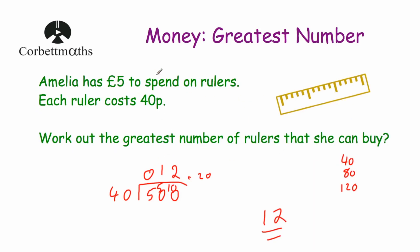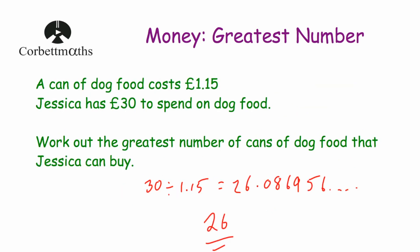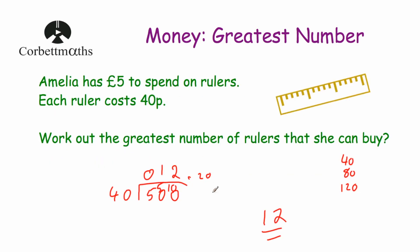In this video we've looked at how to find the greatest number, or maximum number, of an item that can be purchased for a certain amount of money. We've looked at how to do it using a list of multiples — the cost of one item, two items, three items, and so on — and also using division and a calculator. We've also looked at how to work out how much change is left after buying the maximum number of items. I really hope you found this video useful — if you did, please like it and subscribe to the YouTube channel. Thanks, cheers, bye!